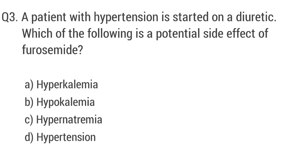Question number three. A patient with hypertension is started on a diuretic. Which of the following is a potential side effect of furosemide? The right answer is option B: hypokalemia.